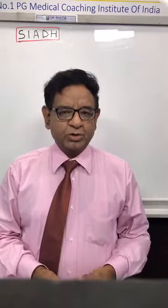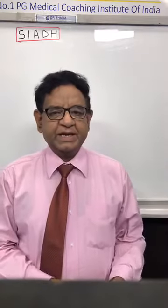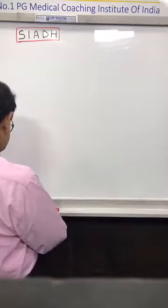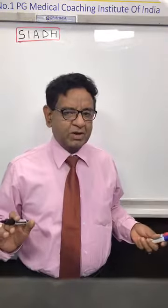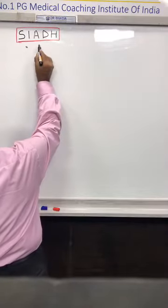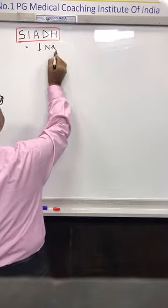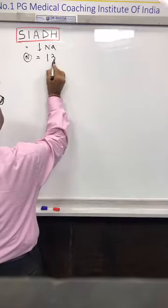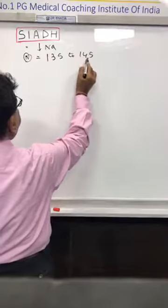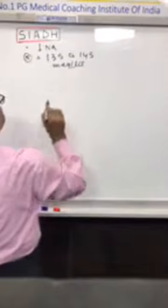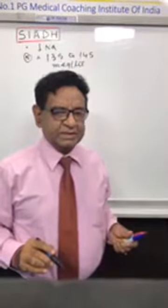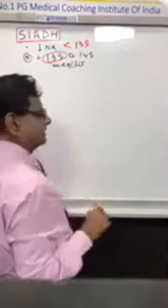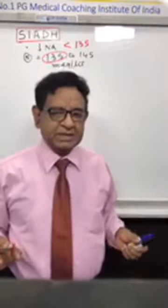Hello friends, today I'll talk about a very important topic: SIADH, that is Syndrome of Inappropriate Secretion of ADH. The hallmark of this condition is hyponatremia, meaning serum sodium is less than normal. Normal serum sodium is 135 to 145 milliequivalents per liter, and in SIADH serum sodium is usually less than 135 milliequivalents per liter.